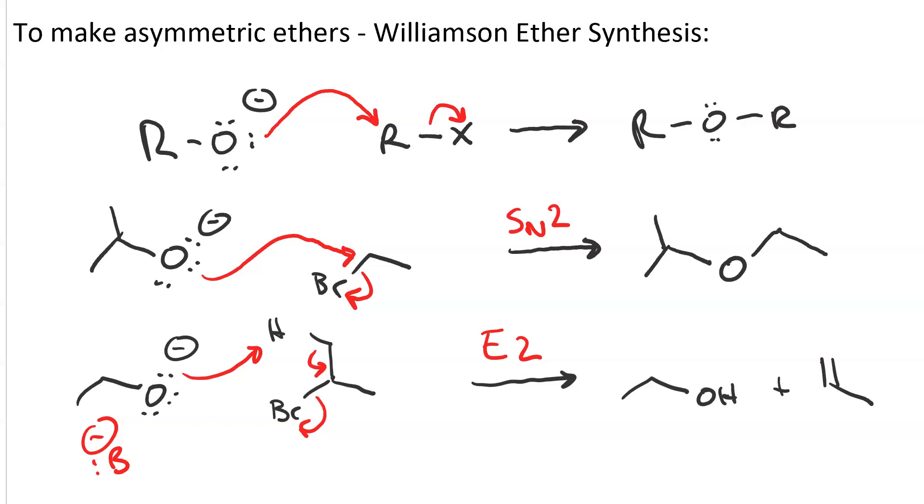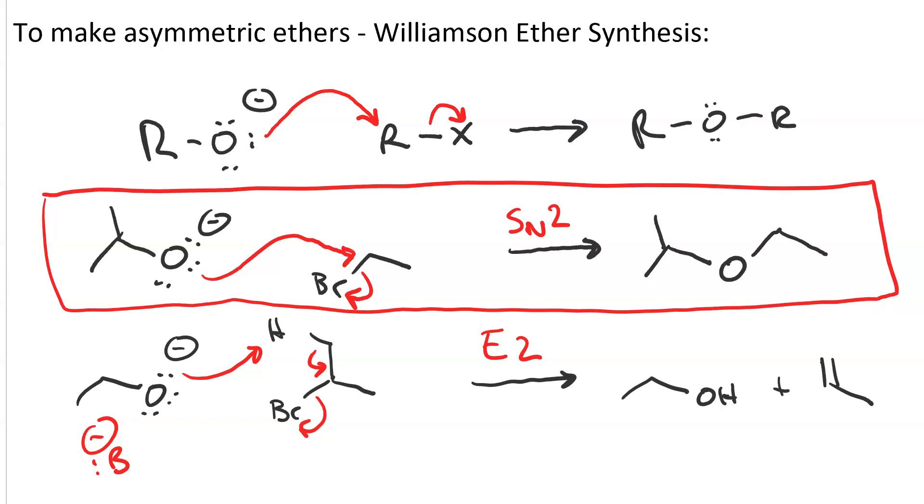So the Williamson ether synthesis only works with a more substituted alkoxide and a primary or methyl halide.